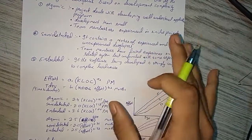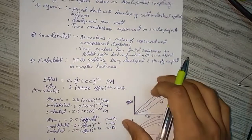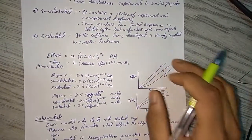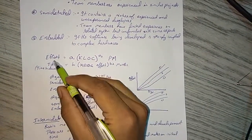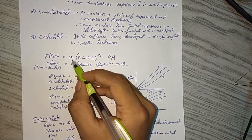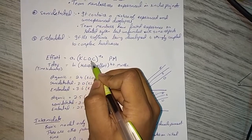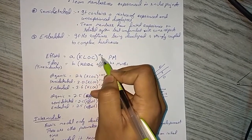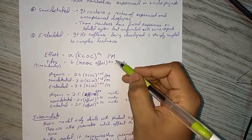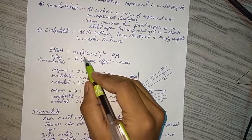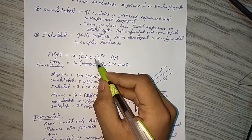So we have an equation for finding the effort. Effort equals a1 times KLOC (kilo lines of code) raised to a2, PM. a1 and a2 are constants and KLOC is the lines of code in thousands.